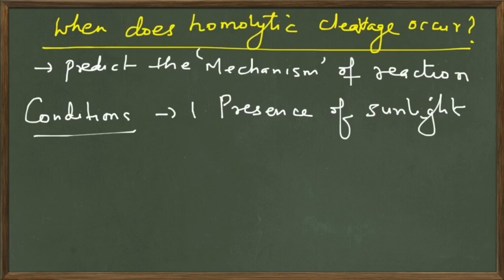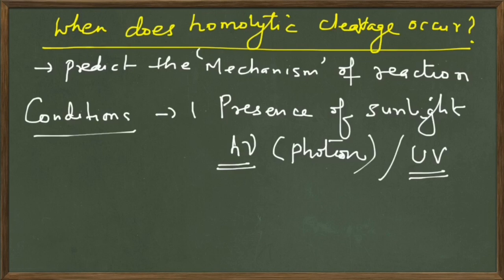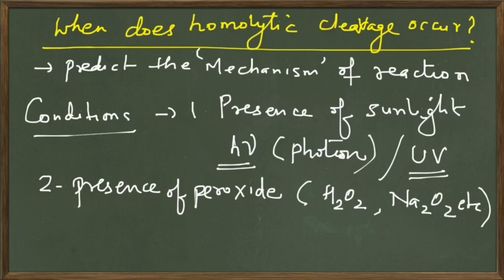There are many ways to write sunlight in a reaction: you can write hν, which shows the energy of a photon, or it can also be written as UV (ultraviolet rays). Whenever you see any of these, you should assume that the reaction goes by homolytic cleavage. The second condition is the presence of a peroxide — for example H₂O₂ or Na₂O₂. If such species are present, the reaction will proceed by homolytic cleavage.